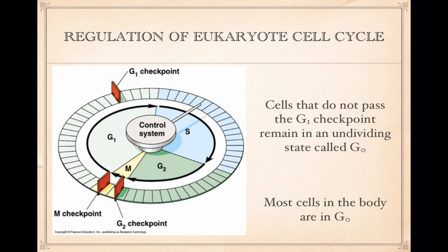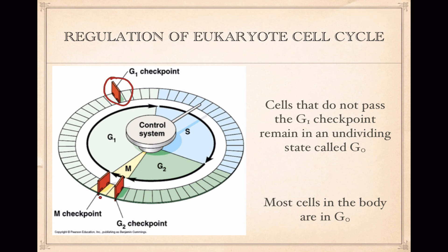You can represent this concept with something that looks a lot like a thermostat — it's a control system with two checkpoints. We've got the G1 checkpoint and we've got the G2 checkpoint, the two that we're going to be focused on.